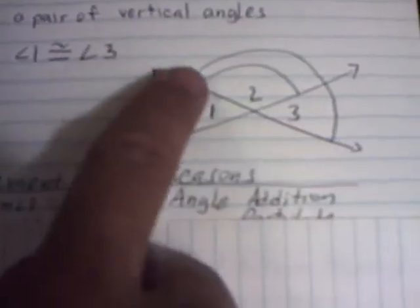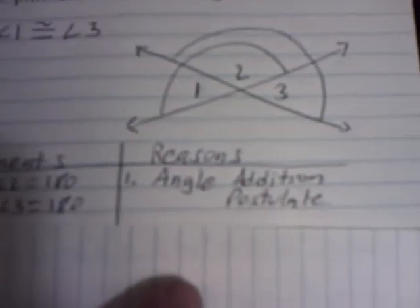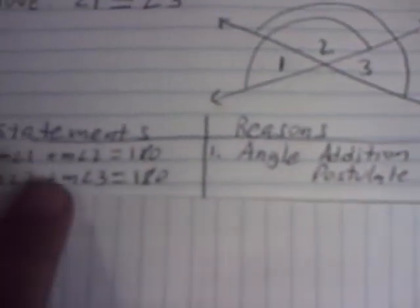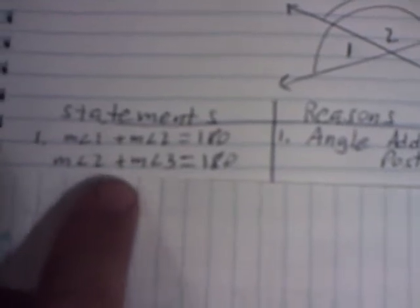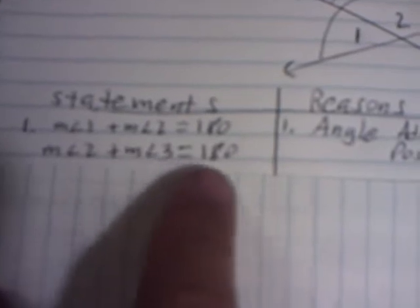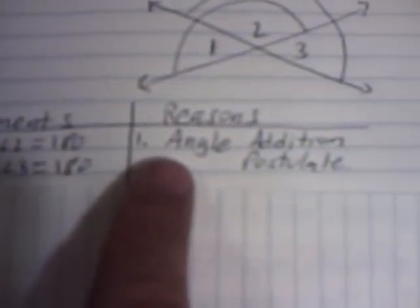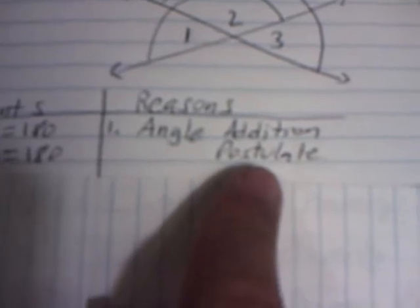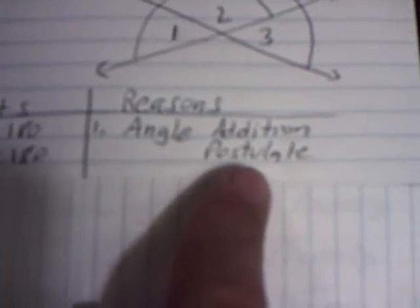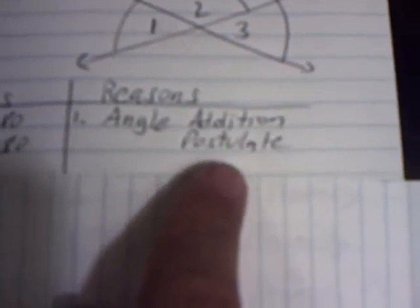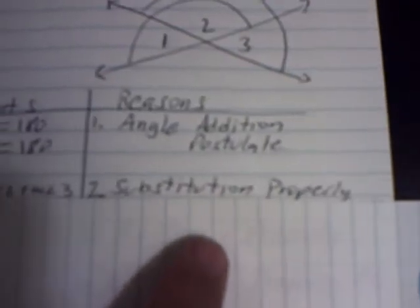Looking at the drawing again, angles two and three are also a straight line, so angles two and three also equal 180. That's part of the same statement: the measurement of angle two plus the measurement of angle three equals 180. These two facts share the reason of the angle addition postulate, because when you add two angles you get the sum of both.